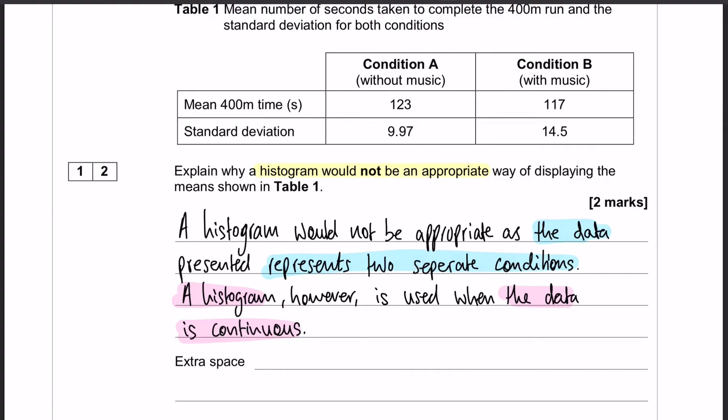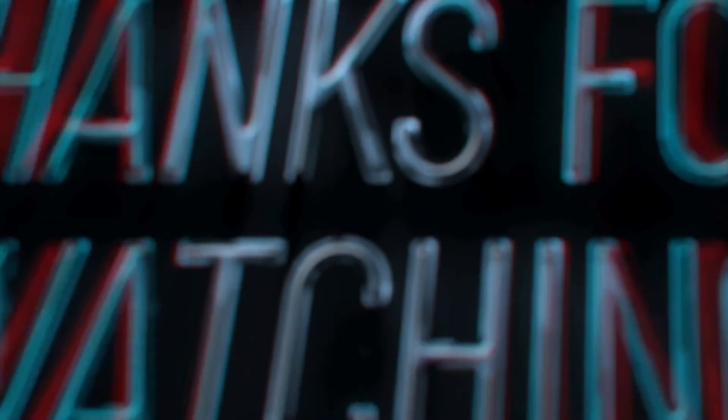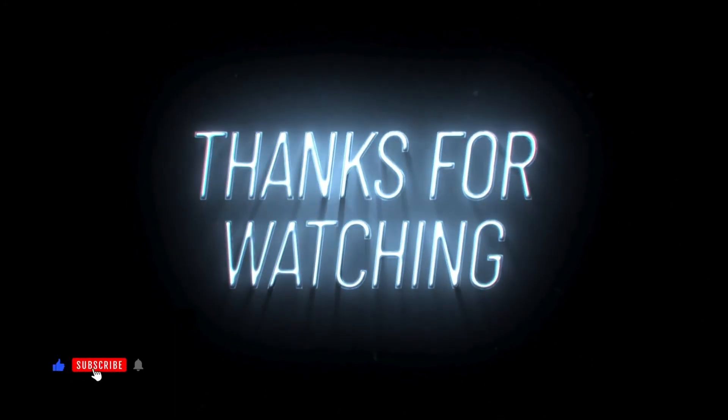So again, one mark for identifying that you only use a histogram for continuous data, and the second mark for identifying that the data that you have in front of you is not continuous but rather two separate conditions. Those were questions 10, 11, and 12.